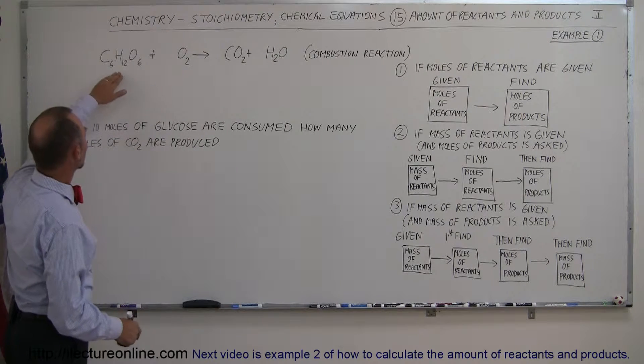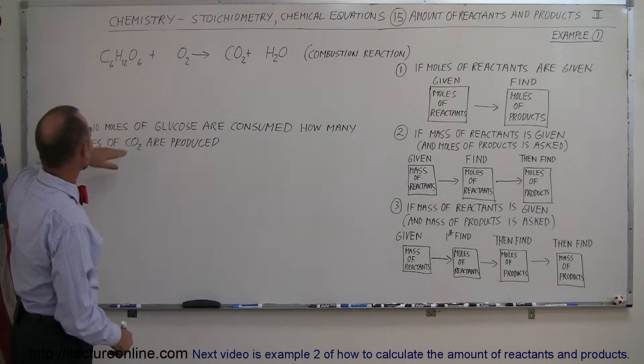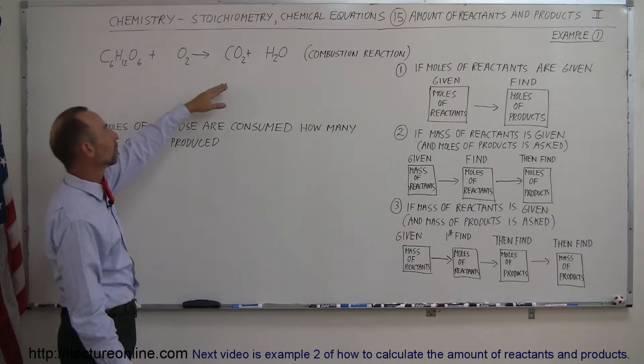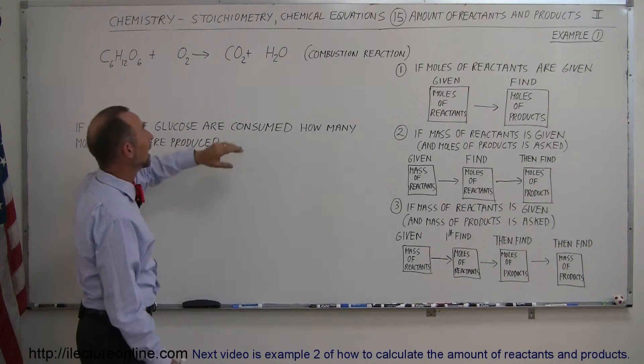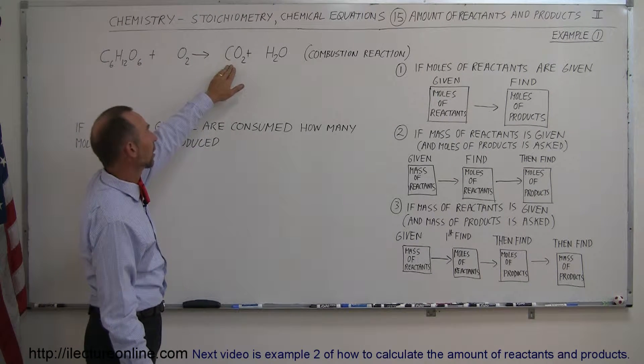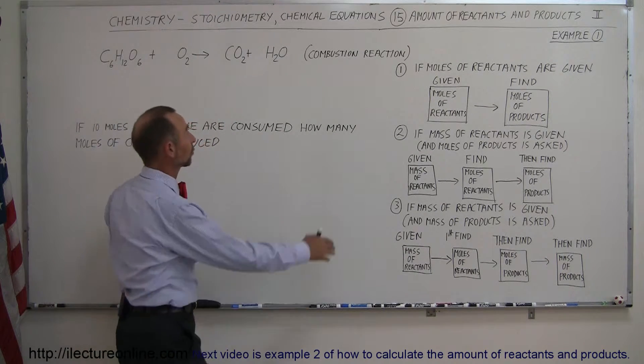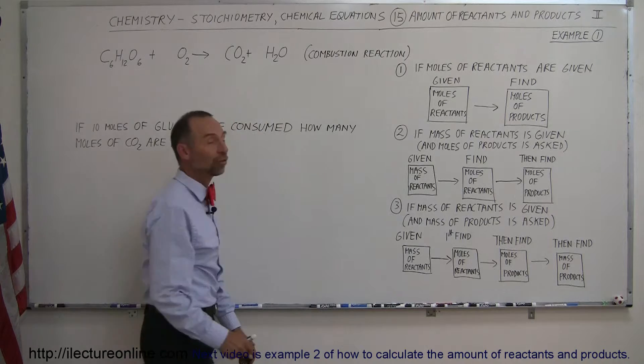So here we have some glucose that's being consumed. Assuming that we're consuming 10 moles of glucose and we breathe in oxygen, our bodies will then turn that into energy and the byproducts are that we breathe out carbon dioxide and we also produce water. That's then known as a type of combustion reaction.